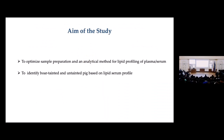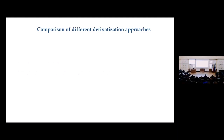The aim of the study is to optimize the sample preparation method which is able to analyze the lipids — here we are mostly focusing on fatty acids — and to have a method which can help us do that, and after that to use that method to detect boar taint. When we talk about GC, derivatization becomes essential.